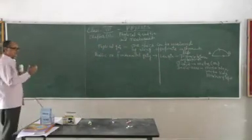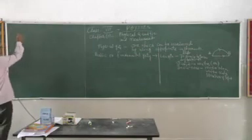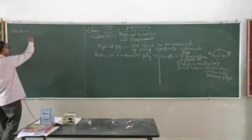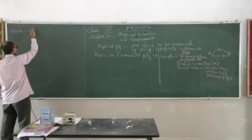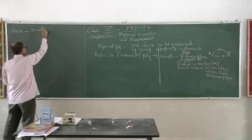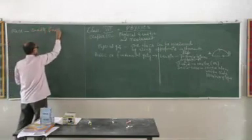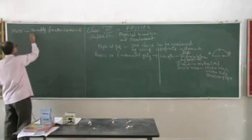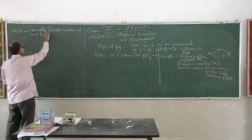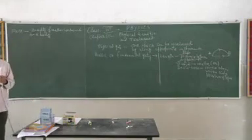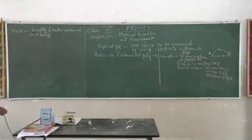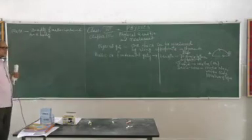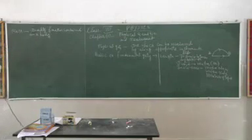The next fundamental quantity is mass. Mass we read: quantity of matter contained in a body. That is called mass. Mass is quantity of matter contained in a body.